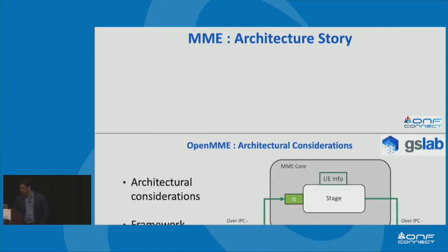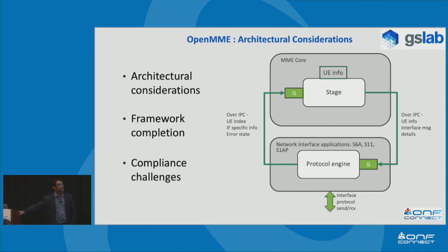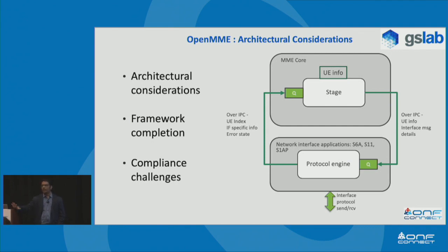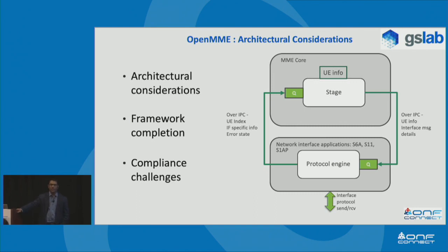Let me come to MME and give a bit of architectural history on how it was designed. When we started MME, the main design consideration was that it should support 500,000 UE connections with an attach rate of 1,000 per second. At 1,000 per second, you have to complete one attach in one millisecond. Since MME has eight different stages to complete one attach, you have to complete one stage in 125 microseconds. This was a tough problem to solve — we developed a lot of architectural and mathematical models with help from Intel Labs researchers, proved it on paper, then proved it in code, and got this MME into OMIC.